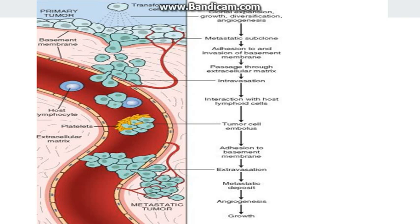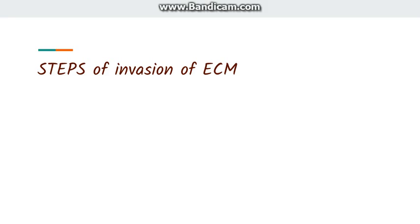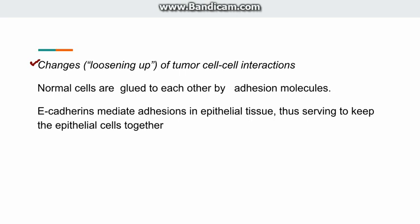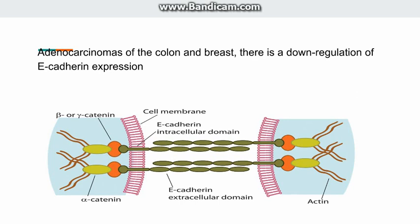Now we will discuss in detail the steps of invasion of the extracellular matrix. The first step is the loosening up of tumor cell-to-tumor cell interaction. Normal cells are mostly adhered to each other with the help of adhesion molecules. Here we will take the example of an adhesion molecule known as E-cadherin, which mediates adhesion in epithelial tissue.